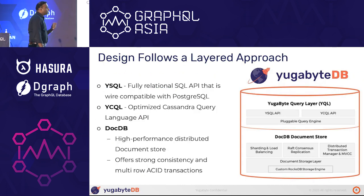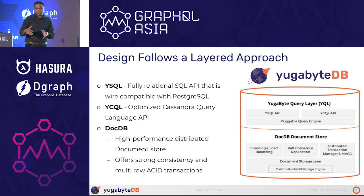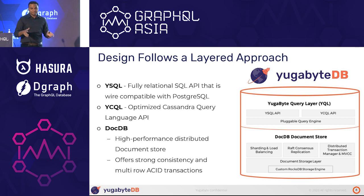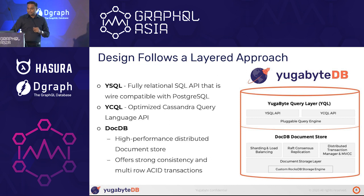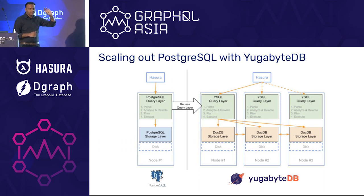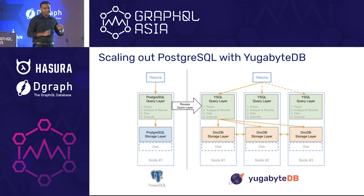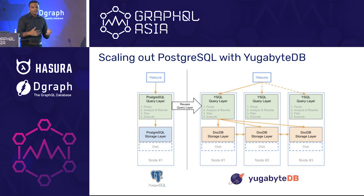YugaByte's design and core principle is a layered architecture. On the bottom layer is a document store — a key-value document store based on RocksDB — which provides strong consistency and ACID transactions. On top of that, we have two pluggable query layers: a 100% PostgreSQL-compatible layer and a Cassandra Query Language layer. Both still store data in the DocDB layer. When you want to scale out the single bottleneck that Hasura GraphQL servers talk to, the scale-out process becomes seamless — you just add new nodes to a YugaByte cluster and we automatically reshard the data without any operational overhead.